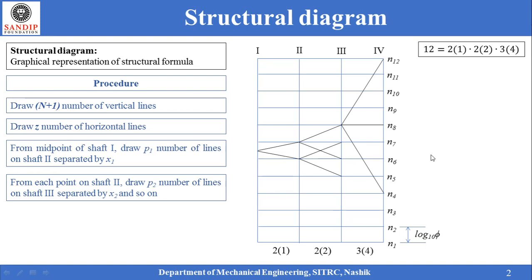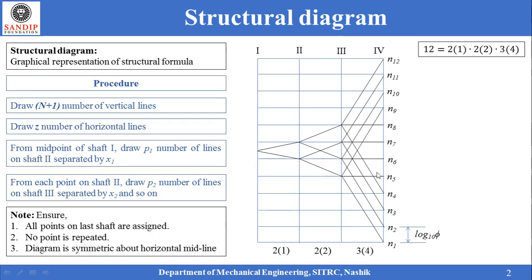The procedure has to be repeated for all the points on shaft 3. It should be ensured that all points on the last shaft are assigned, none of the points is getting repeated, and the diagram is symmetric about the horizontal midline. This structural diagram is satisfying all these conditions and hence it is acceptable.